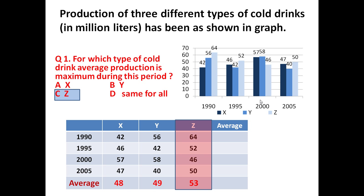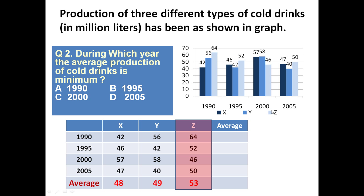Now based on the same graph, there may be more questions. Taking one more question on the same graphical information, we use the same table to answer: during which year is the average production of cold drinks minimum? There are 4 years: 1990, 1995, 2000, and 2005, and we determine the average for each year.